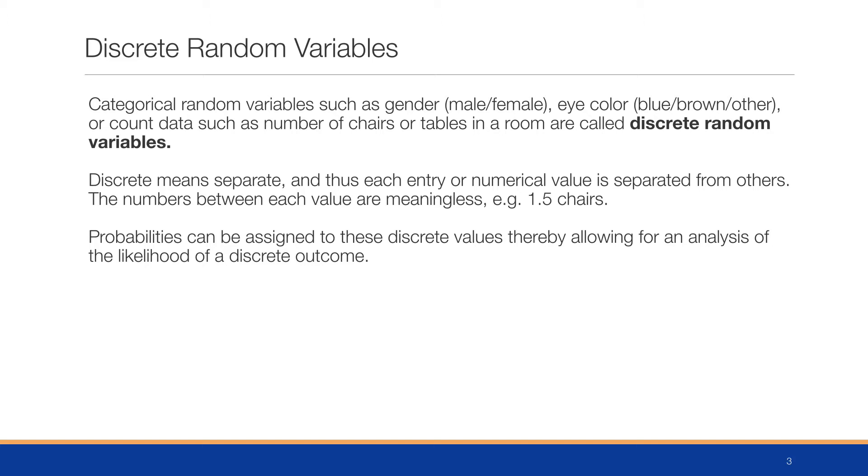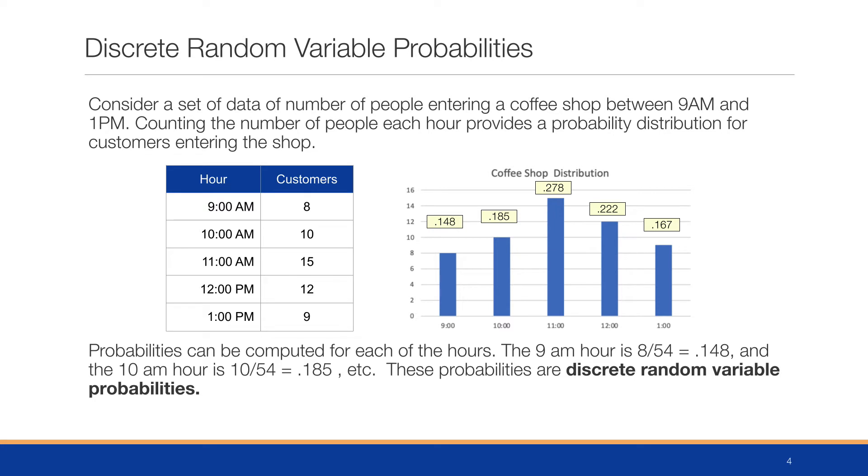Consider a set of data for number of people entering a coffee shop between 9 AM and 1 PM. Counting the number of people each hour provides a probability distribution, and we're going to visualize this for customers entering the shop. At 9 AM eight customers came in, at 10 AM it was 10 customers, at 11 AM it was 15, and so forth. With 54 total events, we know that at 9 AM there's a 14.8% chance, and at 11 o'clock it's 27% of the customers between 9 AM and 1 PM. These probabilities are called discrete random variable probabilities.